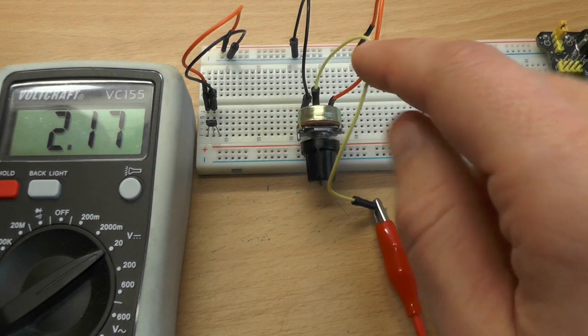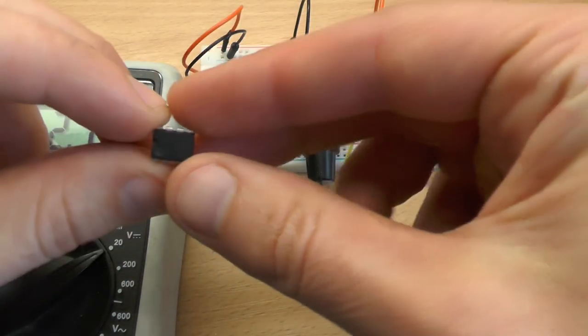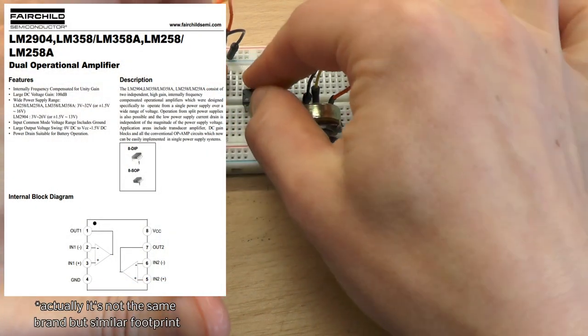The next step is to compare this reference voltage to the output of the sensor. So we just take an operational amplifier